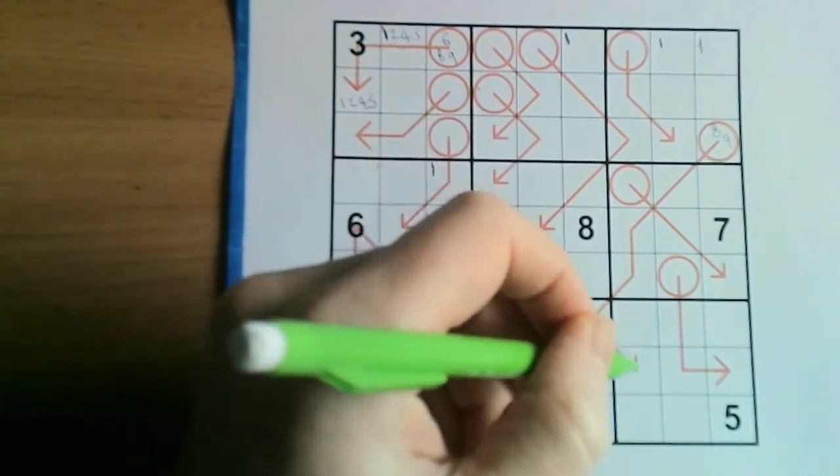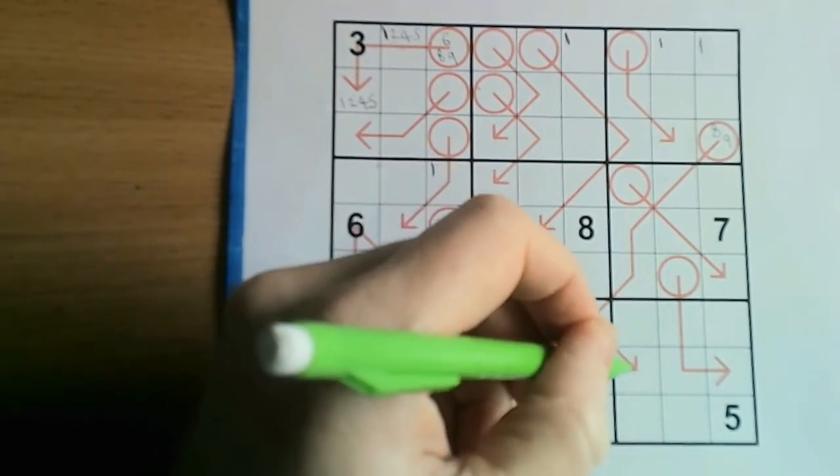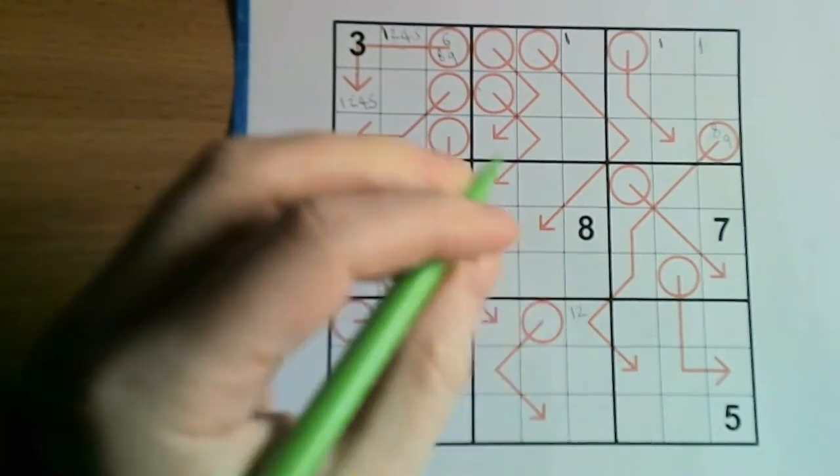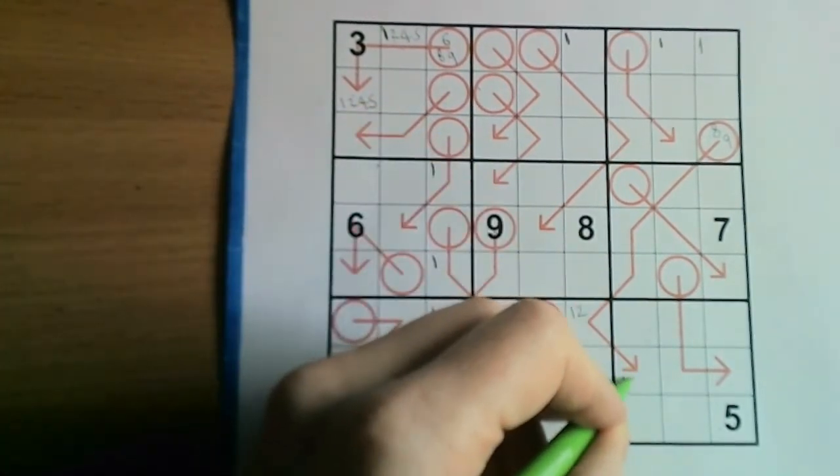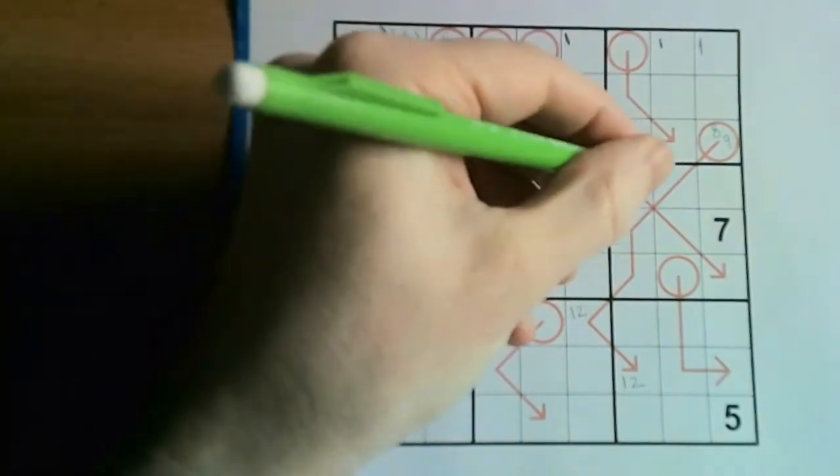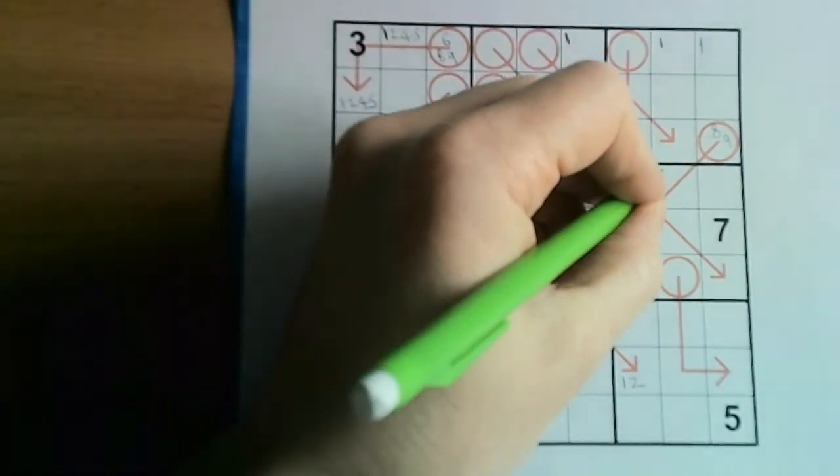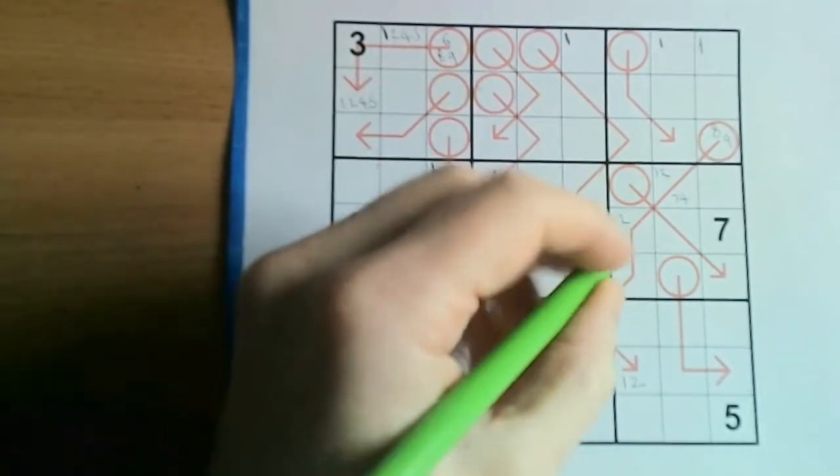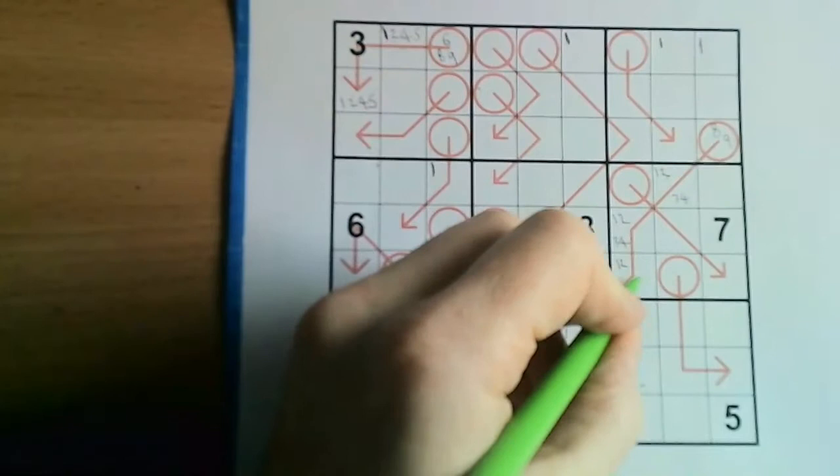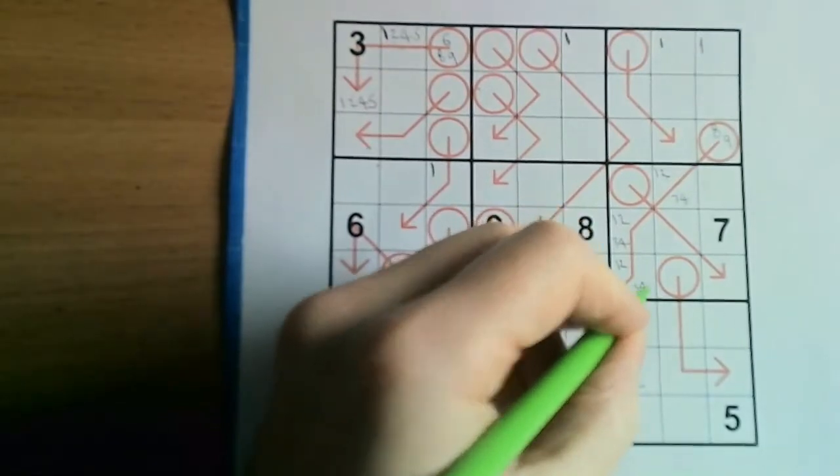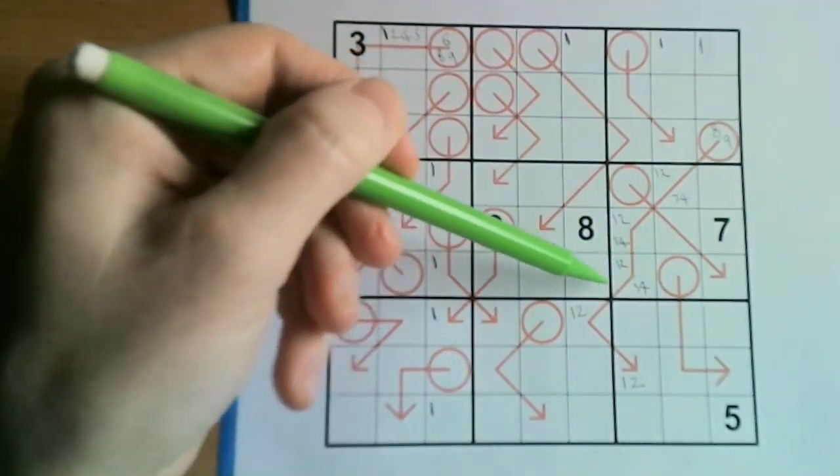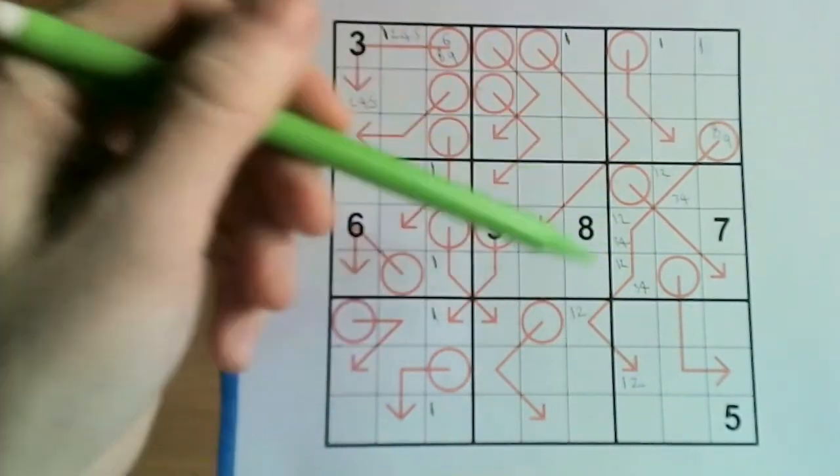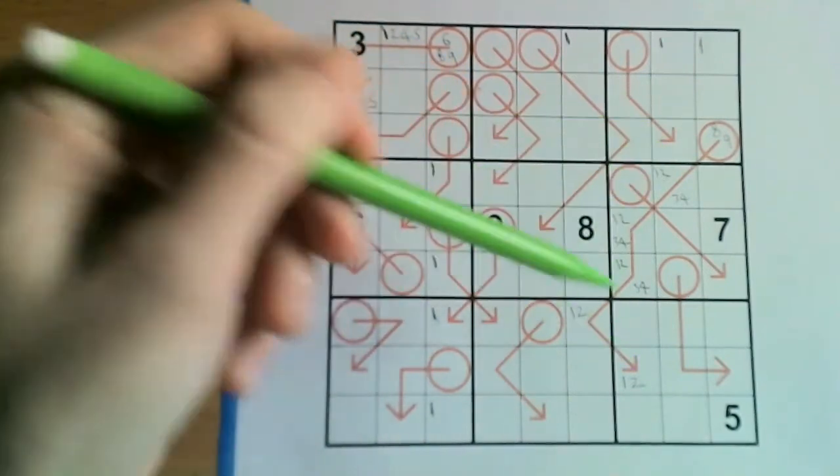And these clearly must sum to 6 or 7. And these must sum to 2 or 3. 3 is the maximum they can sum to. So these are 1, 2, 1, 2, and these are 1, 2, 3, 4, 1, 2, 3, 4. So this has instantly given us lots of really useful information about the values along the body of the region.